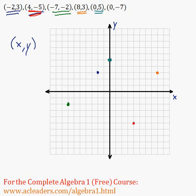And just one more point. We have 0 and negative 7. So again, we don't go to the left nor the right. Because x is just 0. But we go 7 units down. Because y is negative 7. So 1, 2, 3, 4, 5, 6. Negative 7 right here. That's it.